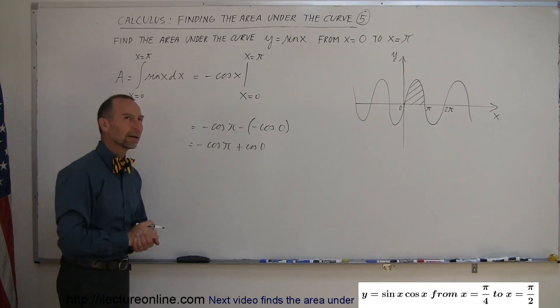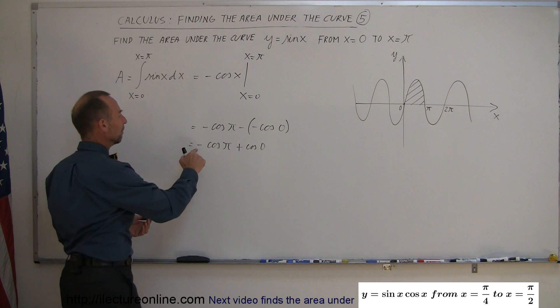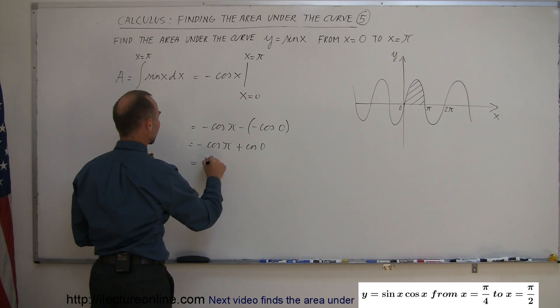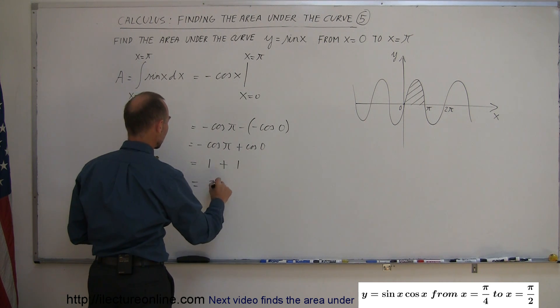What is the cosine of pi? Well, the cosine of pi, pi is 180 degrees, that would be minus 1, and a minus times the minus 1 is a plus 1, so that's plus 1. And the cosine of 0 is 1, so therefore, the sum is 2, which means the area under that curve is equal to 2.